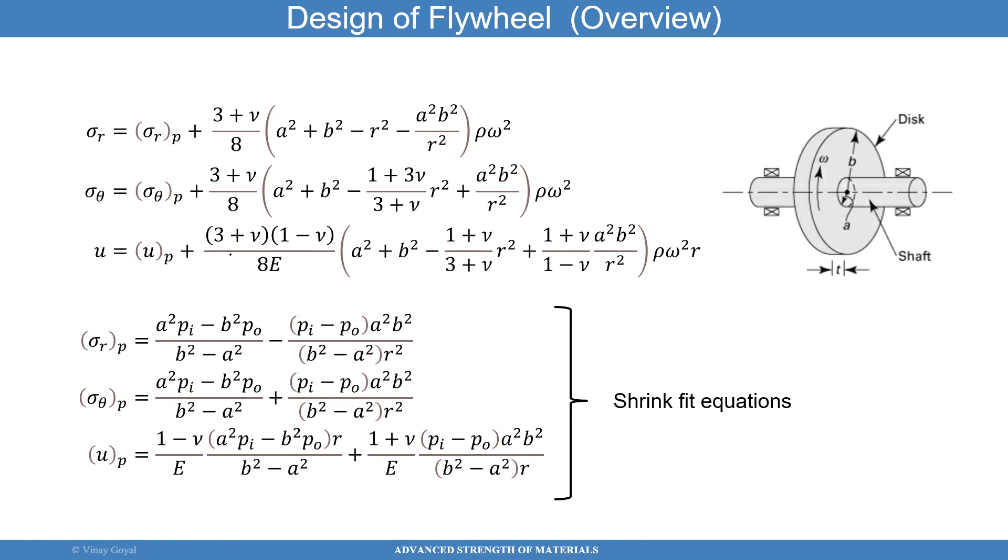And then, we can then add to that the shrink fit equations, where basically, it's really either the internal pressure or the external pressure, depending upon which one you're looking at. If you're looking at the disk, the disk will be the internal pressure that we're worried about. If you're looking at the shaft, it will be the external pressure, because the pressure we're worried about is the pressure at that interface. The interface between the shaft and the disk because of the interference of the shaft being larger than the disk.